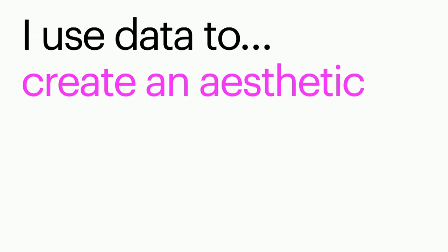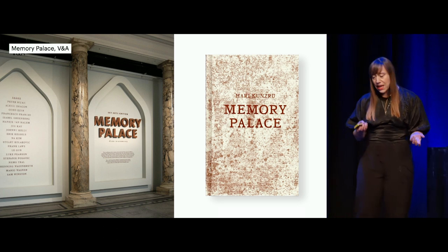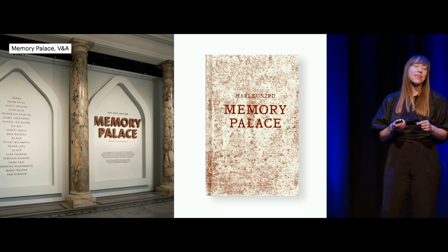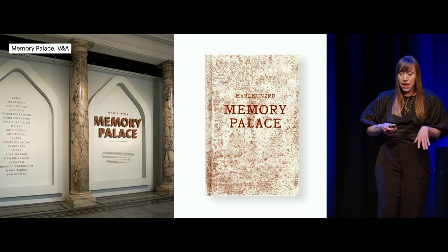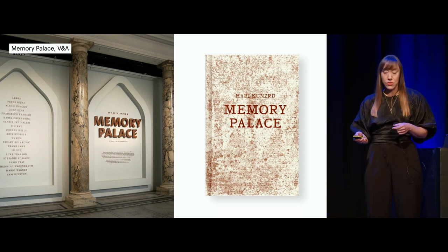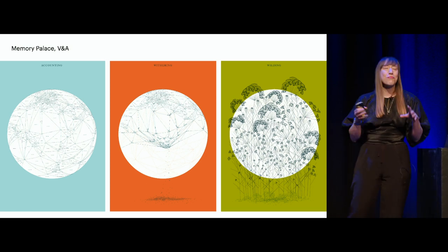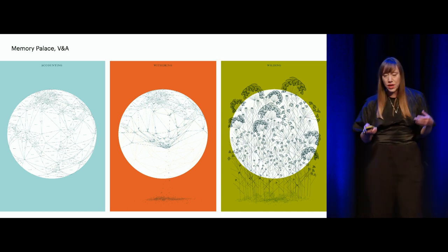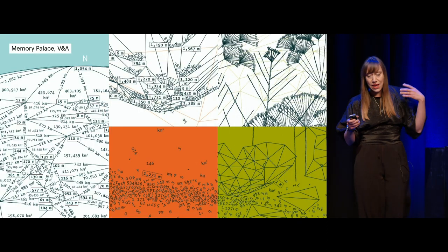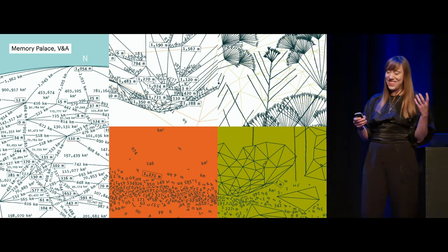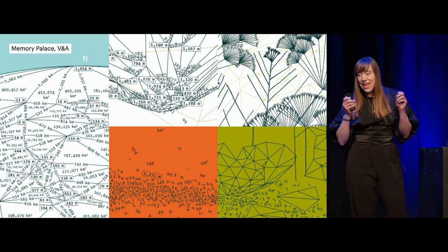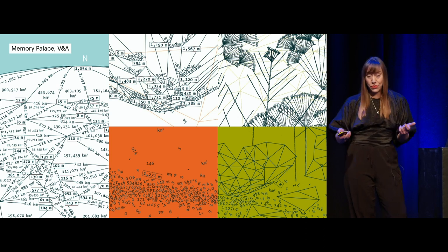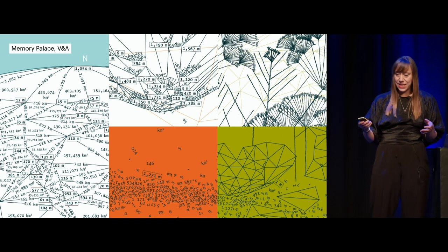I often use data to create a specific visual concept or aesthetic in an artwork or design, like my piece for the Memory Palace exhibition at the V&A in London, where, alongside other designers, I illustrated a story by the writer Harry Kunzru. I created a triptych of prints representing three world maps illustrating his story of a world pre-, during-, and post-apocalypse, where the aesthetic was created through gathering and visualising data relevant to key themes of the story, alongside more traditional illustration techniques.